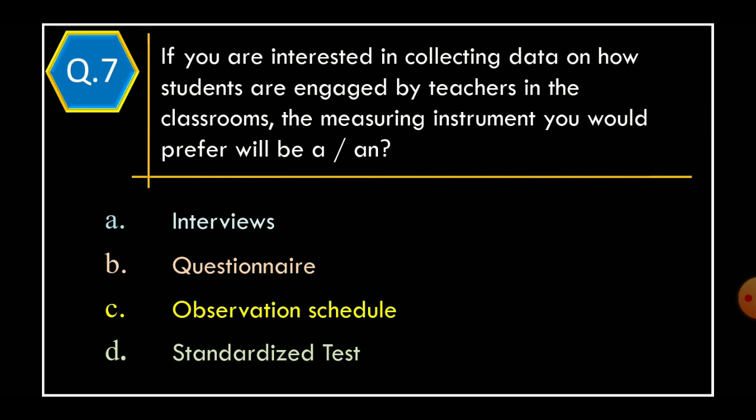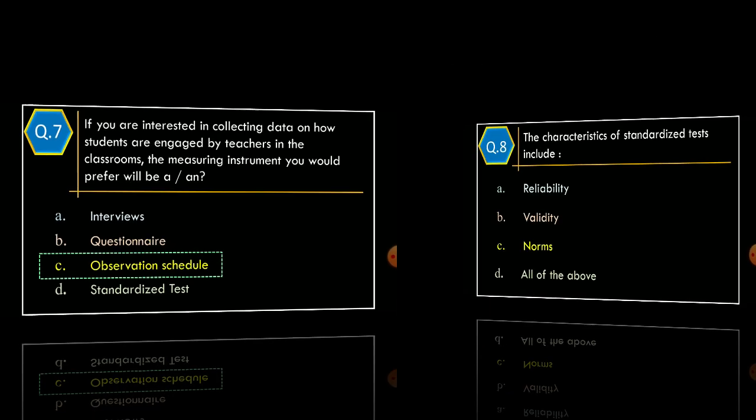Question 7. If you are interested in collecting data on how students are engaged by teachers in the classroom, the measuring instrument you would prefer will be: Option A, Interviews. Option B, Questionnaire. Option C, Observation Schedule. Option D, Standardized Test. And correct option is Option C, Observation Schedule.